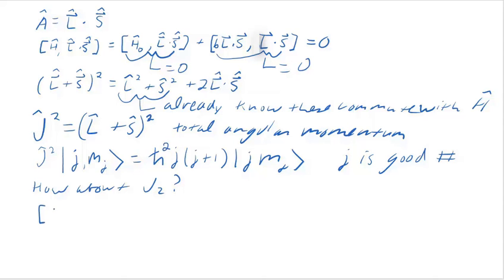The question really is, does the Z component of J commute with the Hamiltonian? This is actually a very simple thing to test out. So write out the Hamiltonian.